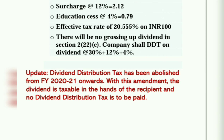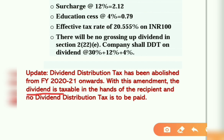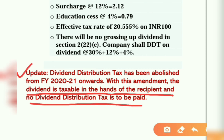Now, there is an amendment in this topic. Dividend Distribution Tax has been abolished from financial year 2020-21 onwards. Matlab, after this, there will be no DDT tax on the company. Company ko tax pay karne ki zaroorat nahi hogi. Wo sirf shareholder aur recipient ke haath mein taxable hoga. Dividend is taxable in the hands of the recipient and no dividend distribution tax is to be paid. This was a very important amendment we need to see.